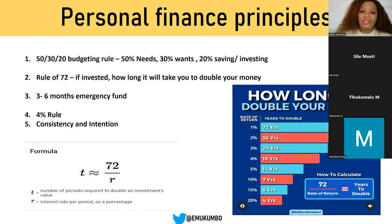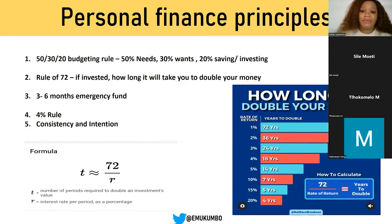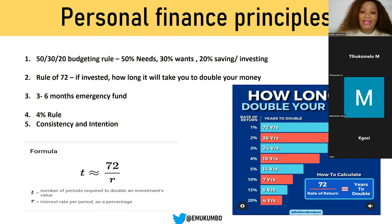There's also the rule of 72 — how long will it take for your money to double? The formula says T equals 72 divided by your rate of return. If your rate of return is 1%, it will take you 72 years for your money to double. The higher the rate of return you can get from an investment, the fewer number of years it will take you to double your money.